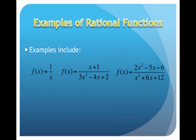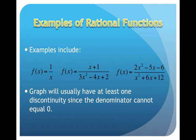Here's another example: f(x) equals 2x squared minus 5x minus 6, all divided by x squared plus 6x plus 12. What we have here is a quadratic function in the numerator and a quadratic function in the denominator — thus, a fraction of polynomials. Those are three simple examples of what rational functions look like. Importantly, the graph will usually have at least one discontinuity since the denominator cannot equal zero. We can have more than one, and we can have none, but usually at least one.